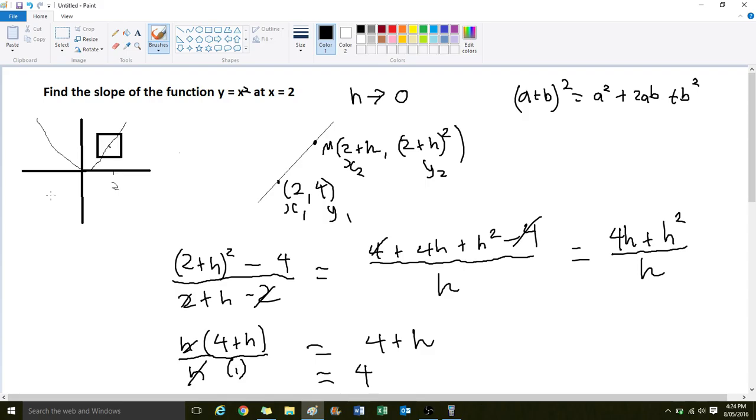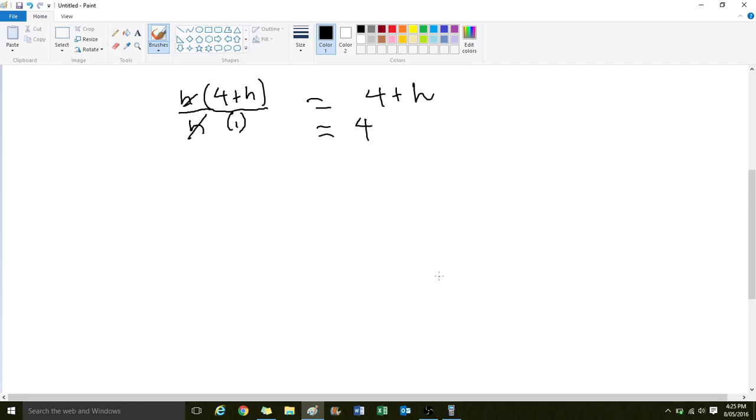So for the function y equals x squared, the slope of the function at x equals 2 is going to be 4. Let's do another one. Let's talk about the function y equals x squared plus 3x. Now it's only going to be ever so slightly different.